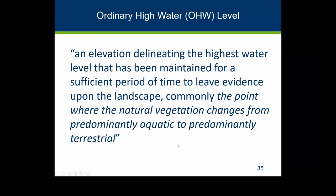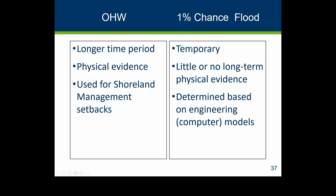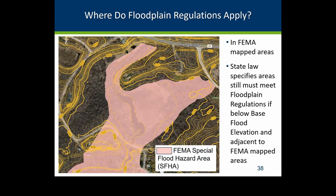The official statutory language states that on streams, the ordinary high is the top of the bank of the channel. The floodplain goes out beyond the channel and is higher than the typical ordinary high. We use the ordinary high for shoreland management setbacks — it's based on longer-term physical evidence, whereas the 1% annual chance flood elevation is based on engineering modeling.